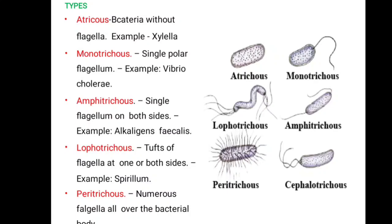There are many types of bacteria depending on their flagella, as shown in the figure. Atrichous bacteria have no flagella — example: Xylella. Monotrichous bacteria have a single flagellum — example: Vibrio cholerae. Amphitrichous bacteria have a single flagellum on both sides — example: Alcaligenes faecalis. Lophotrichous bacteria have a tuft of flagella at one or both sides — example: Spirillum. Peritrichous bacteria have numerous flagella all over the bacterial body.